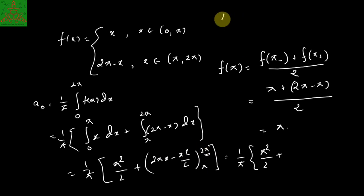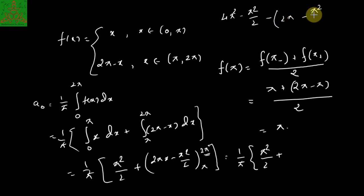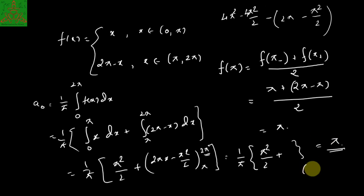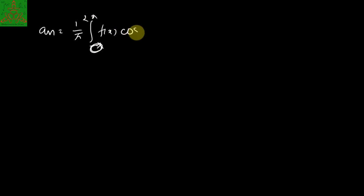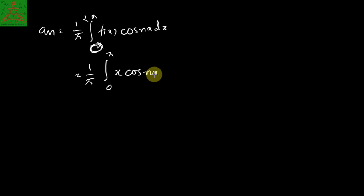Integrating: the first part gives x²/2 from 0 to π = π²/2. The second part is [2πx − x²/2] from π to 2π. Substituting the limits and simplifying, all terms combine to give a₀ = π. The next quantity to calculate is aₙ = (1/π) integral from 0 to 2π of f(x) cos(nx) dx, split into (1/π)[integral from 0 to π of x cos(nx) dx plus integral from π to 2π of (2π − x) cos(nx) dx].